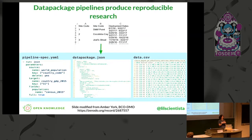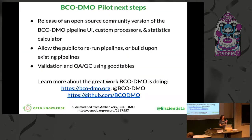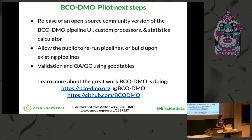To sum up this collaboration so far: we were aiming to take BICO-DEMO's messy data, run it through the pipeline, and get out the pipeline spec YAML file, the data package, metadata, and the raw data that can then be used by other researchers or data managers further down the road. We just ended phase one and we're going into phase two. Our next steps are the release of the open source community version of this pipeline, which will allow the public to rerun these pipelines or build upon them. We're also adding in validation with the GoodTables library to check that the data remains valid throughout this process.